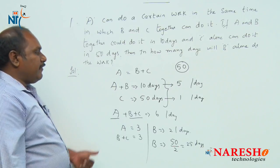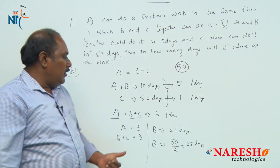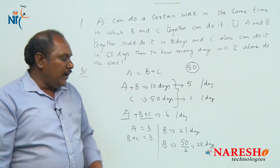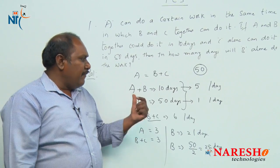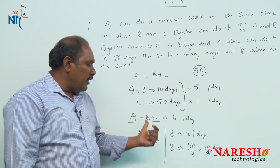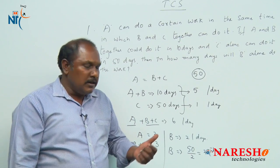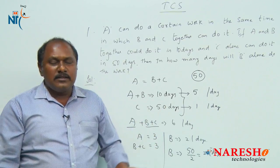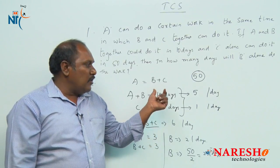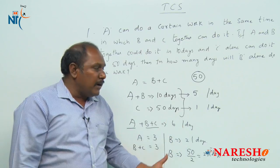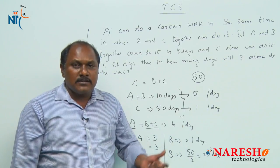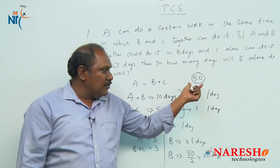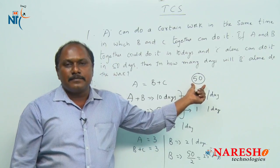The total work is 50 chocolates, and B eats 2 chocolates per day, so 50 divided by 2 equals 25 days. B alone will complete the work in 25 days. Similarly, we can find how many days A alone would take. Using this LCM-based method, we can solve this type of time and work problem easily.